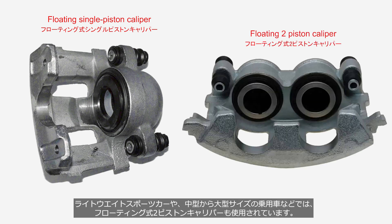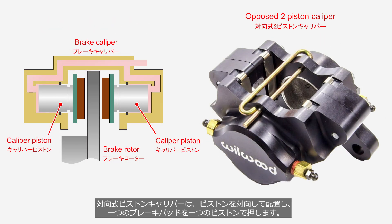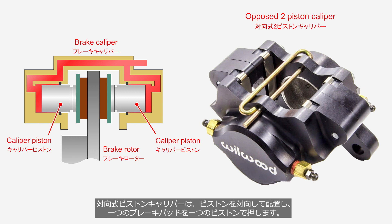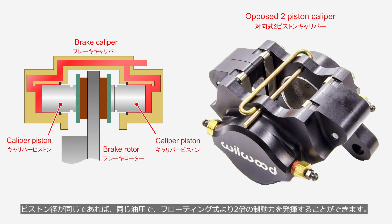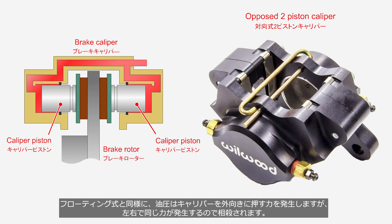Floating two-piston calipers are also used in lightweight sports cars or mid- to large-sized passenger cars. Opposed piston calipers have pistons arranged opposite each other, with each piston pressing against one brake pad. If the piston diameters are the same, opposed piston calipers can produce twice the braking force as floating calipers with the same hydraulic pressure. Similar to floating calipers, the hydraulic pressure generates an outward force on the caliper, but since the same force is produced on both sides, they are cancelled out.